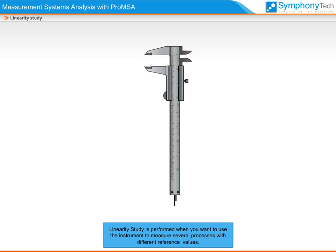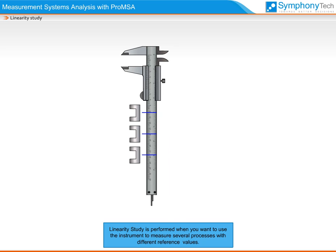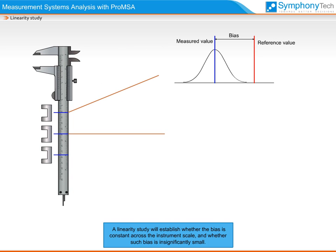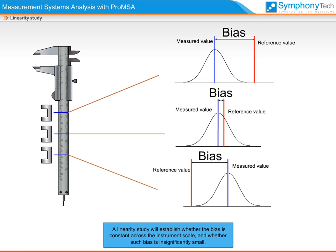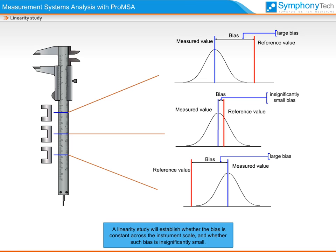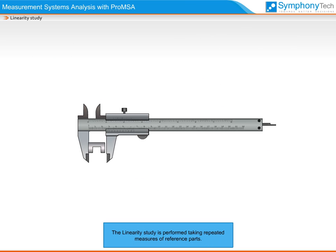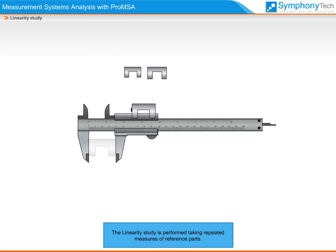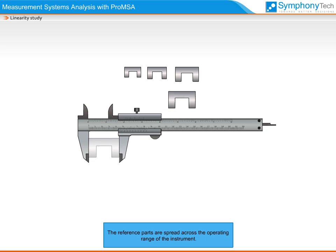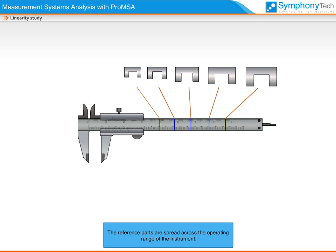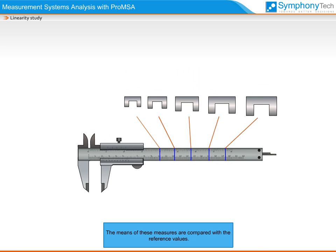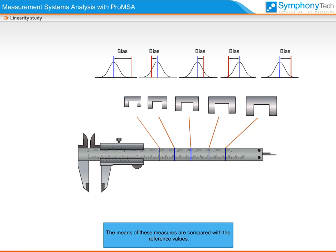The linearity study is performed when you want to use the instrument to measure several processes with different reference values. The linearity study will establish whether the bias is constant across the instrument scale and whether such bias is insignificantly small. The study is performed by taking repeated measures of reference parts that are spread across the operating range of the instrument, and the means of these measures are compared with the reference values.